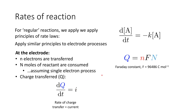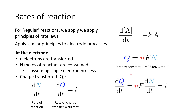We also have our rate of reaction, which is the rate of change of our reactant as a function of time. Fundamentally, we are looking at a rate equation, whether it's a rate of transfer of charge or a rate of consumption of reactant. All we need to do is find our first derivative with respect to time. If we differentiate both sides, we get an expression: the rate of charge transfer with respect to time — our current — can be equated to the rate of the reaction and the Faraday constant.